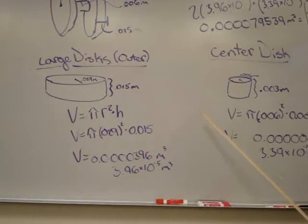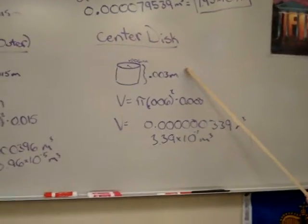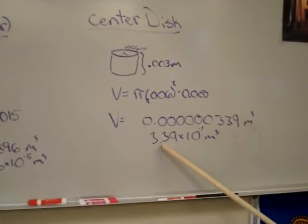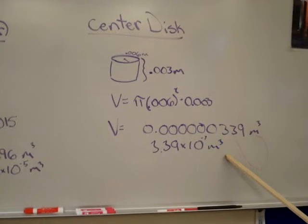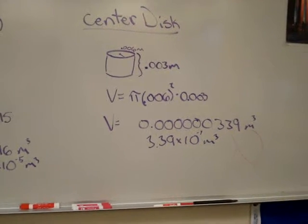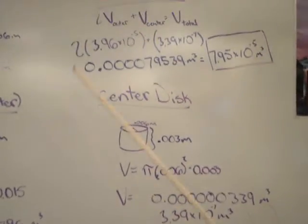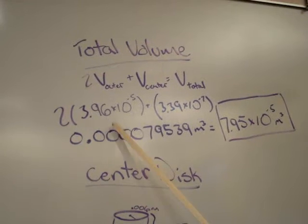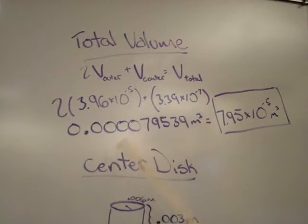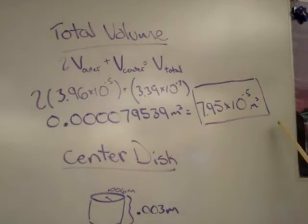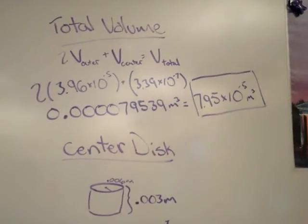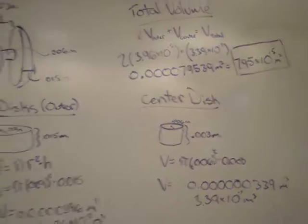Using the same equation, we found the volume of the center disc, which came out to be 3.39 times 10 to the negative 7th meters cubed. So now we have to look at the total volume of the yo-yo itself. This would be 2 times the outer disc because there are two discs, one for each side, plus the center disc. This came out to be 7.95 times 10 to the negative 5th meters cubed. That is the total volume of the yo-yo.